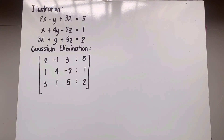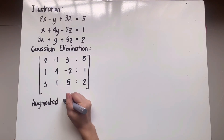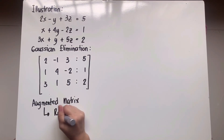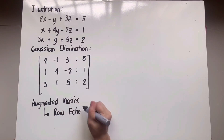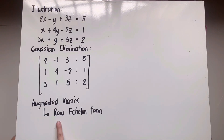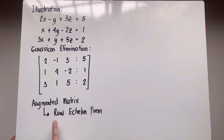For the Gaussian elimination method, the idea is to transform the augmented matrix into row echelon form. In matrices, we have echelon forms and there are two types: row echelon form and reduced row echelon form. For Gaussian elimination, it requires us to transform the augmented matrix into row echelon form.